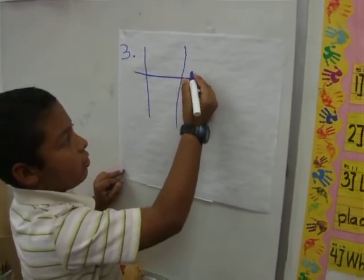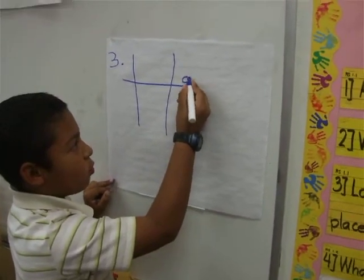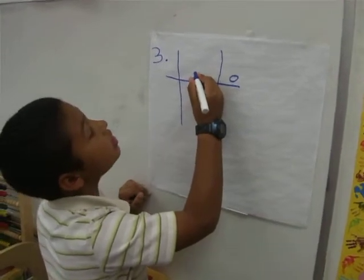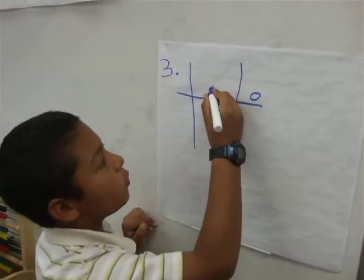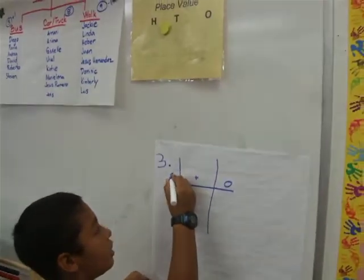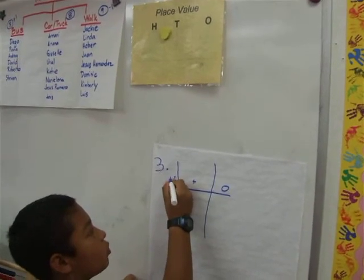And O stands for 1's. T stands for 10's. And H stands for 100.